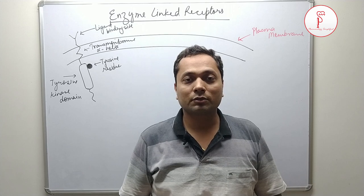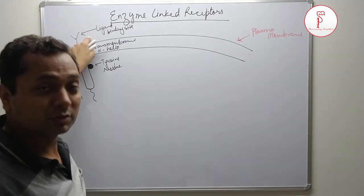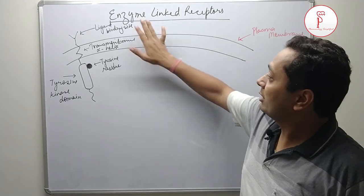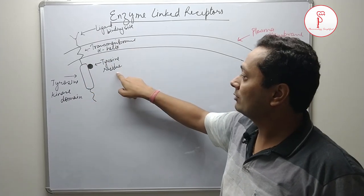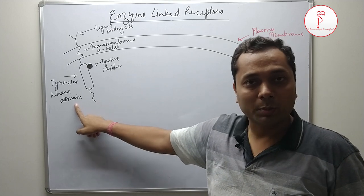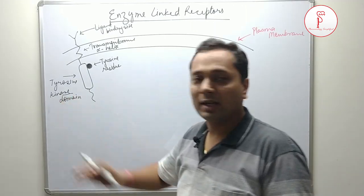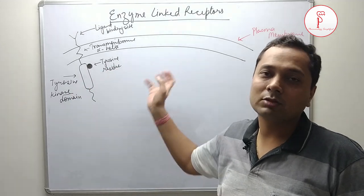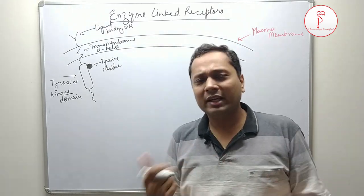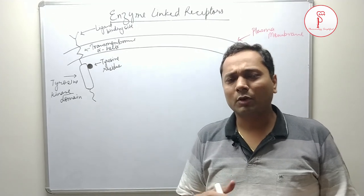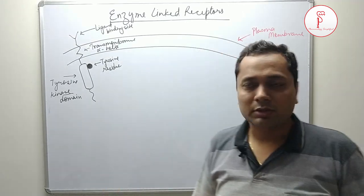Let me explain the basic structure of the tyrosine kinase receptor. It comprises several units. First, as with every receptor, we have the ligand binding site. After this is the transmembrane alpha helix, which links the extracellular and intracellular sides. Then we have the tyrosine residue and the tyrosine kinase domain — this is the enzyme. Tyrosine kinase is responsible for phosphorylation, and phosphorylation of any protein activates it, such as channel activation or enzyme activation.